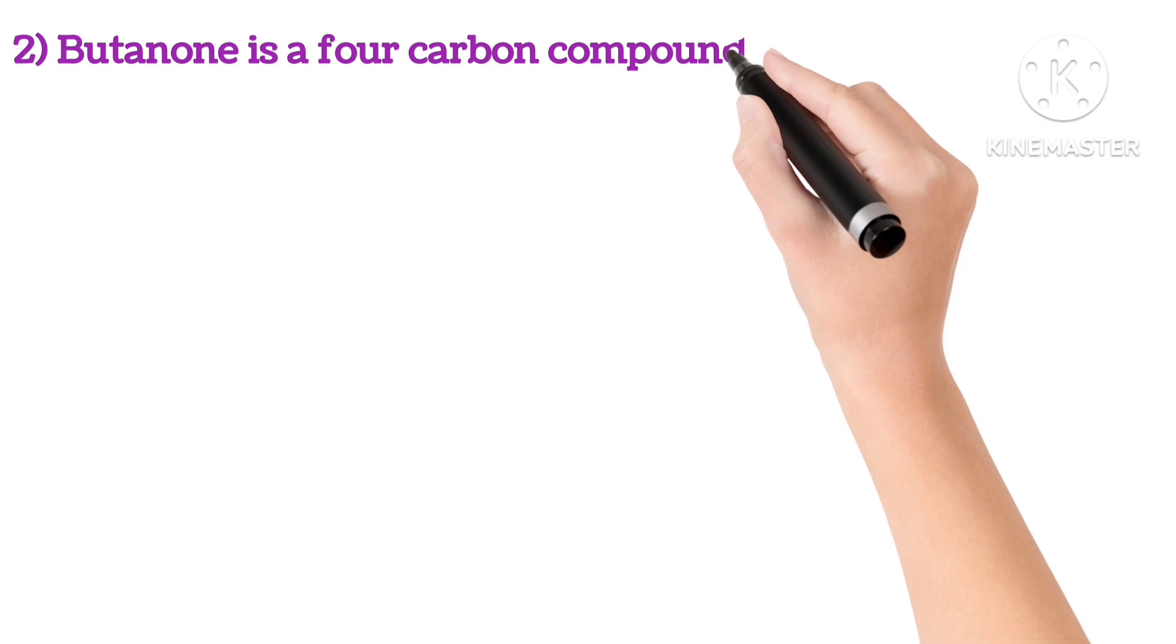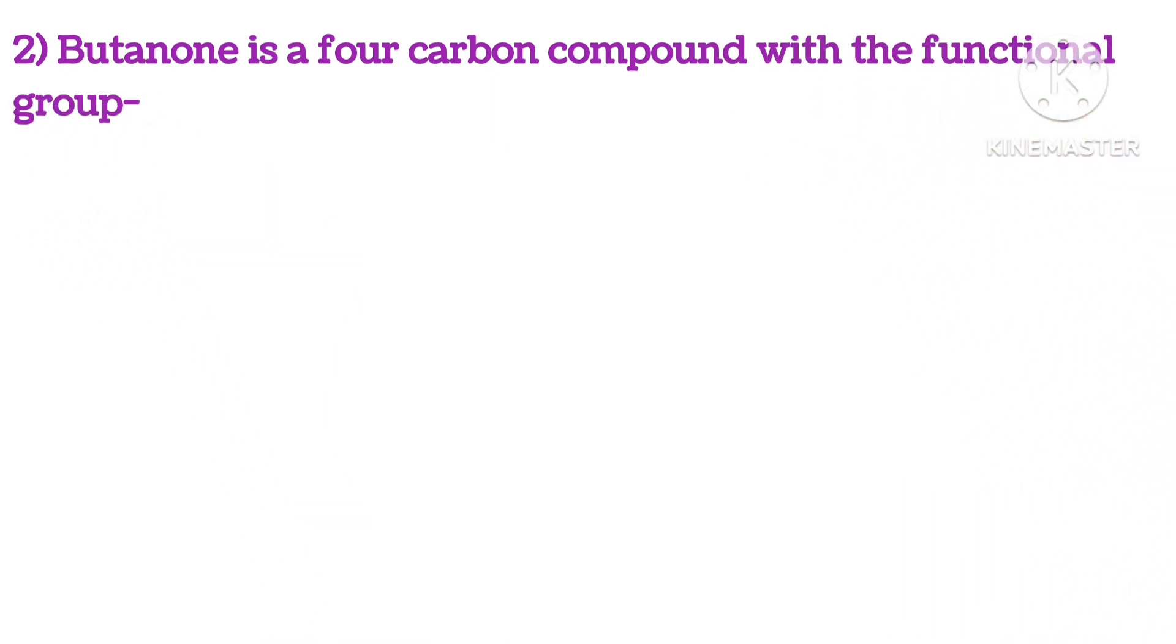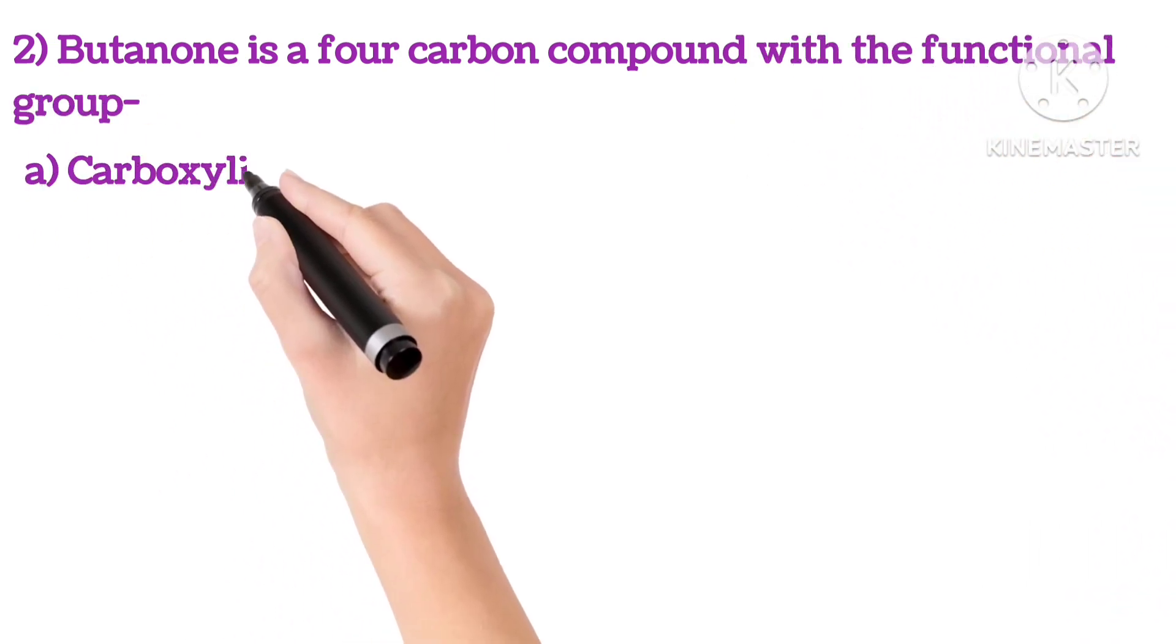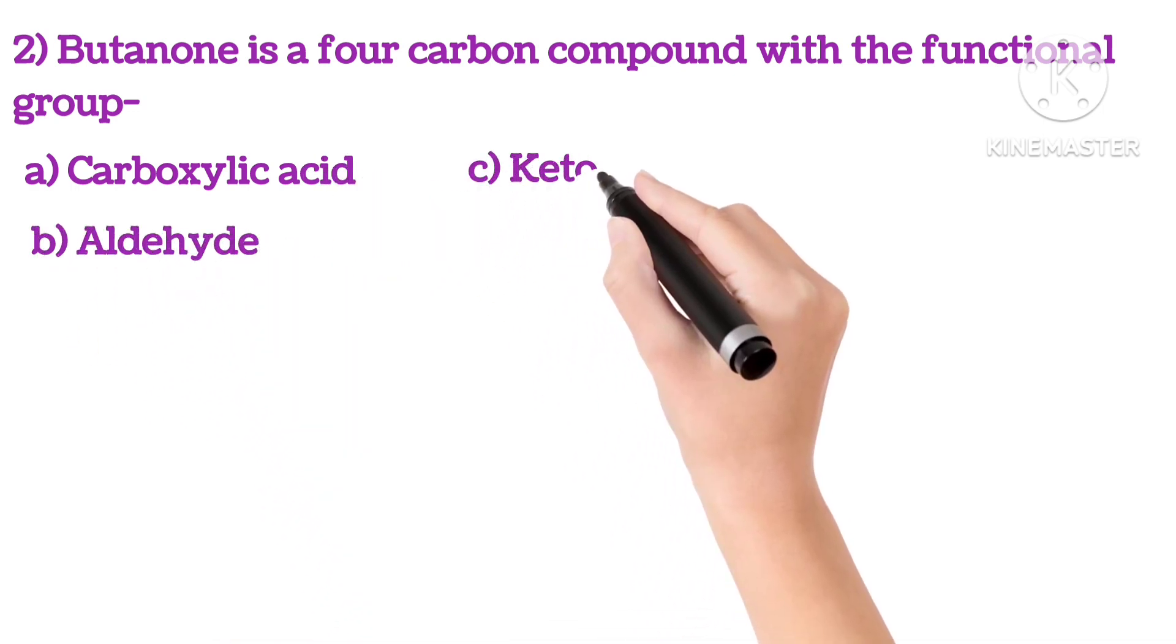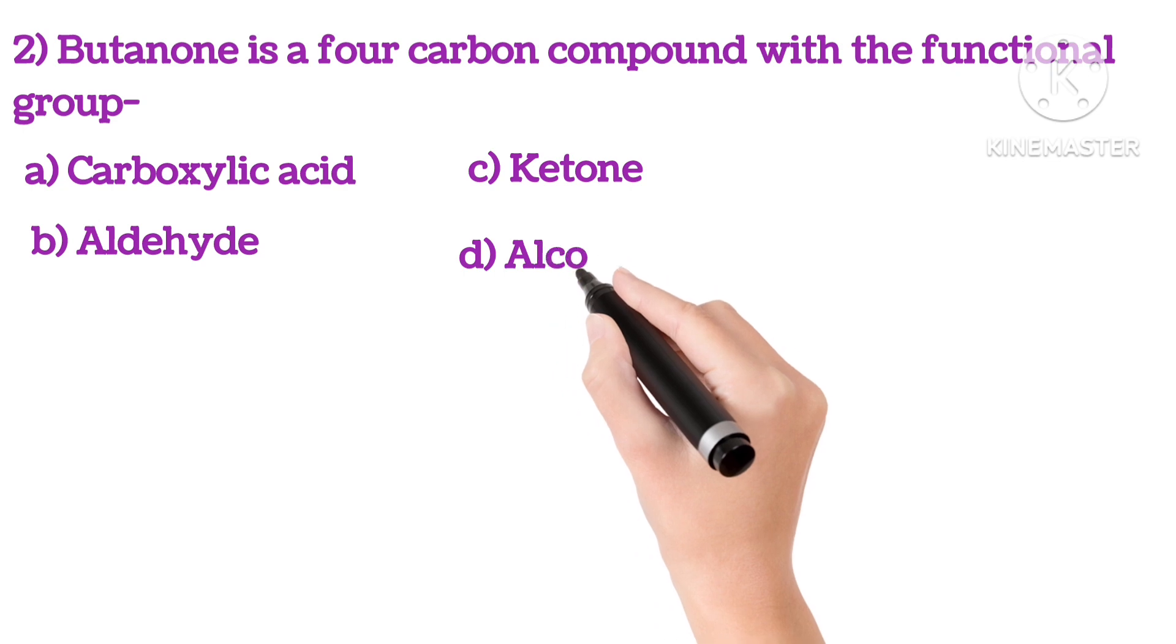Second, butanone is a 4 carbon compound with a functional group: A. Carboxylic acid, B. Aldehyde, C. Ketone, or D. Alcohol.